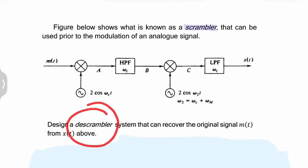In order to understand what a descrambler might look like, we need to understand what's happening in this scrambler circuit. We have two filters and two multipliers where we have a local oscillator at the carrier frequency and another local oscillator at a frequency higher than the carrier frequency.